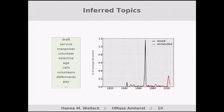Over here we have another topic. The top words are draft, service, manpower, volunteer. And here we have a massive spike around 1969 — the year of the first draft for the Vietnam War. We also have a spike in declassification: these documents are being declassified in 2003, which was around about the beginning of the Iraq War.